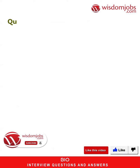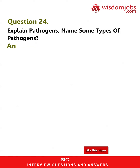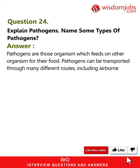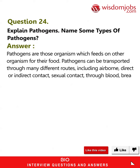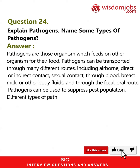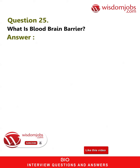Question 24: Explain pathogens and name some types. Pathogens are organisms that feed on other organisms for their food. They can be transported through many routes including airborne transmission, direct or indirect contact, sexual contact, through blood, breast milk or other body fluids, and through the fecal-oral route. Pathogens can also be used to suppress pest populations. Different types of pathogens include viral, bacterial, and fungal.